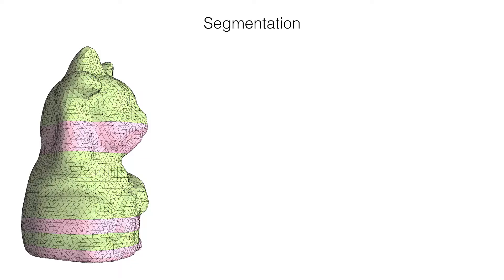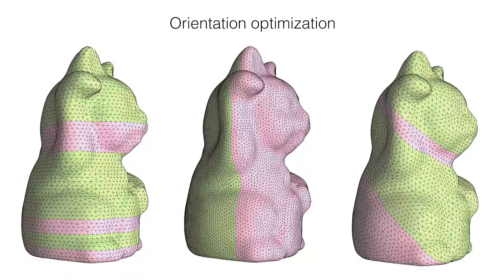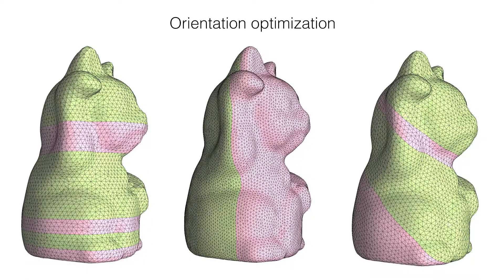We first remesh and then segment the shape. Each segment will result in a packable subspring. We sample this process for different spring orientations and choose the optimal one.